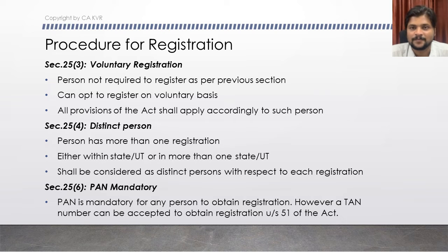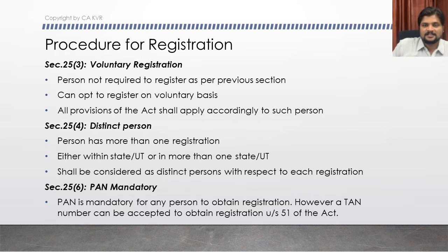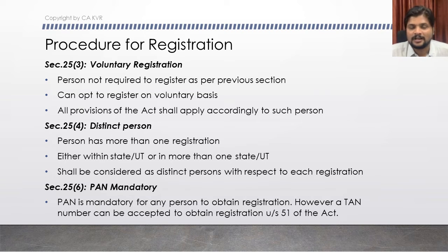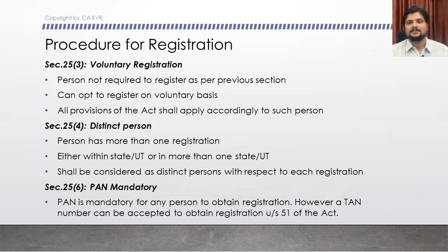Subsection 4 speaks about distinct persons. If a person has more than one registration - whether within the same state or in multiple states - each such registration is called a distinct person in respect of the other. Any supplies made between these two registrations will also be called a supply and tax has to be charged on that. You cannot claim that since you are the same person holding two registrations, there will be no tax liability - they are called two distinct persons under the Act and the provisions of the Act will become applicable.